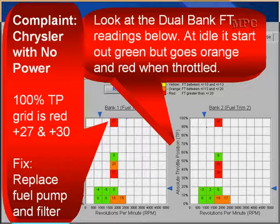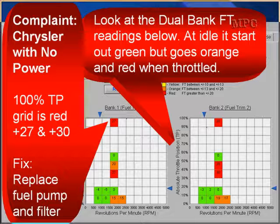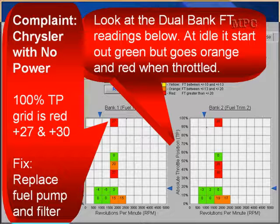Here's one with an actual customer complaint of no power, a lack of power. At 100% throttle, when you whack the throttle, we go up to 27% fuel control on bank one and 30% on bank two. The fix was that we replaced the fuel pump and the filter. At lower throttle openings and lower RPM we had good fuel control, but when fuel demand increased we had bad fuel control. Under heavy load we just did not have enough fuel. It ended up being poor fuel pressure and volume — pressure caused by the pump, volume caused by the filter.